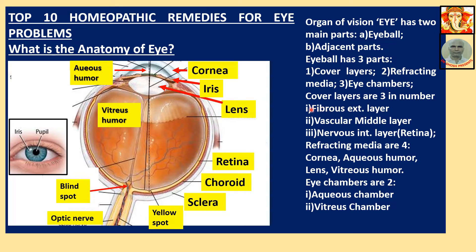Covering layers are three in number. The first is the fibrous external layer — this white outer layer. The backward portion is truly called the sclera. It is called sclera — this is the white of the eye.